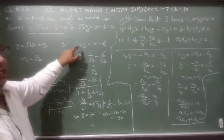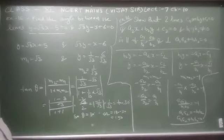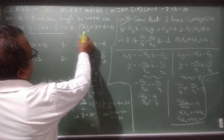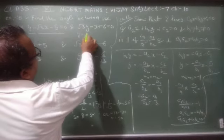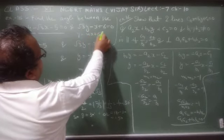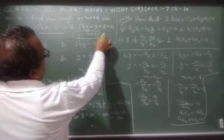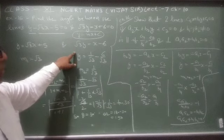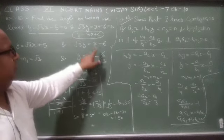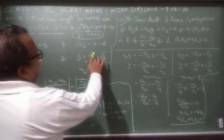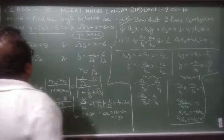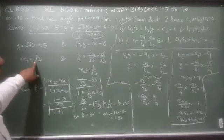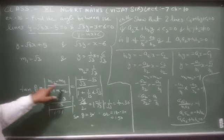दूसरी equation में दोनों sides को √3 से divide करना होगा क्योंकि slope intercept form में y का coefficient 1 होता है। √3y = x - 6, divide by √3: y = (1/√3)x - 6/√3। तो m2 = 1/√3। अब दोनों values formula में put करेंगे।